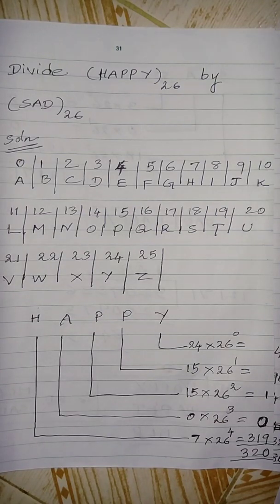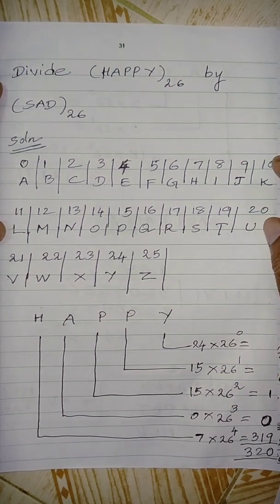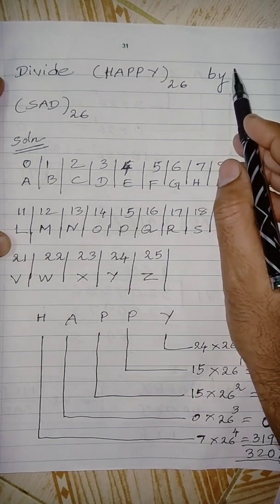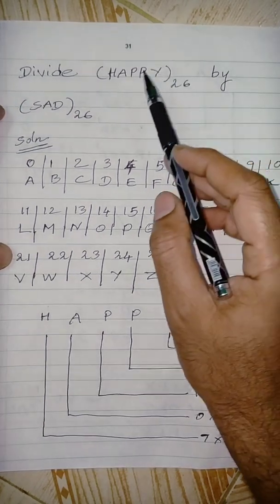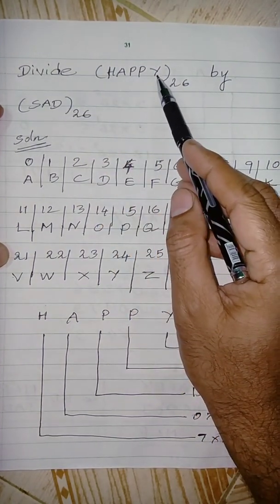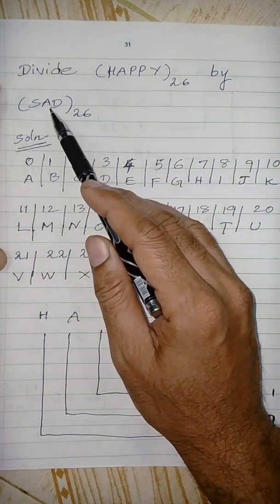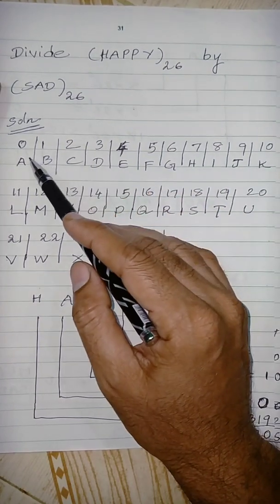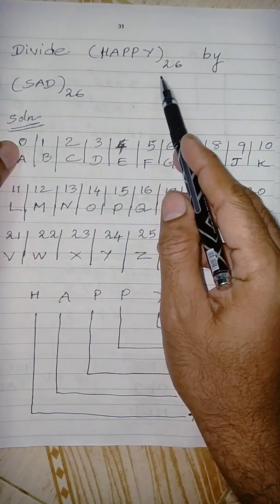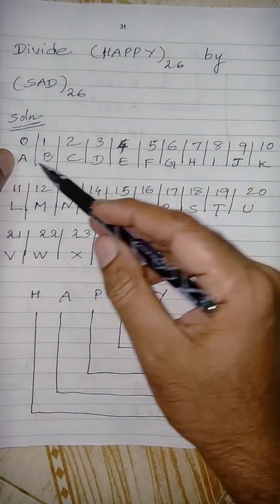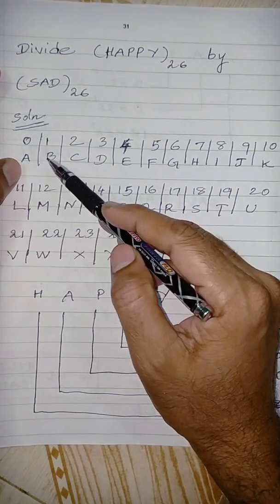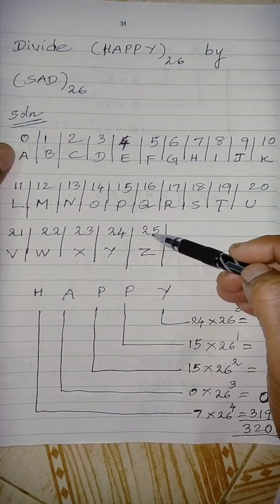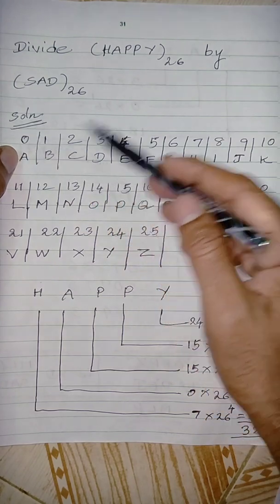Welcome, I am Krishna Kumar, Department of Mathematics. The topic is cryptography — number theory and cryptography. So, divide HAPPY base 26 by SAD base 26. The meaning of base 26 is the labels given here: 0 to 25, A to Z. So A represents 0, B labeled 1, C is 2, D is 3, up to Z which is 25, giving us 26 values total.